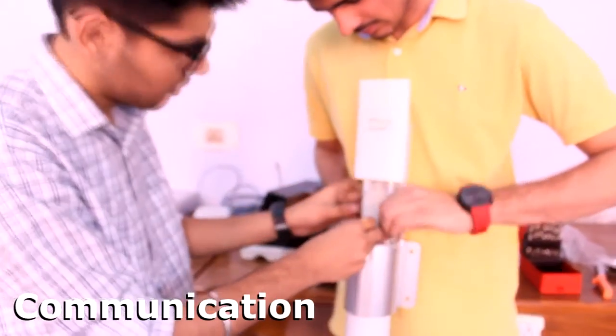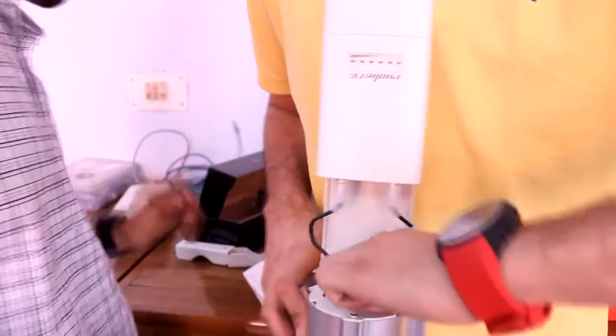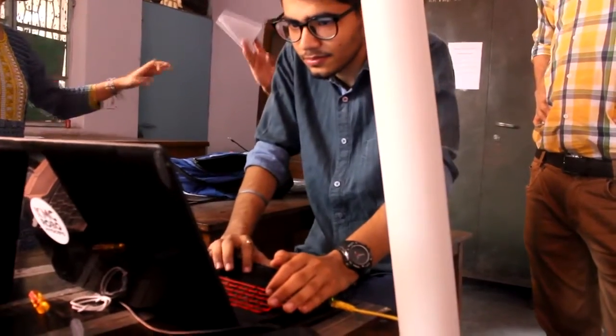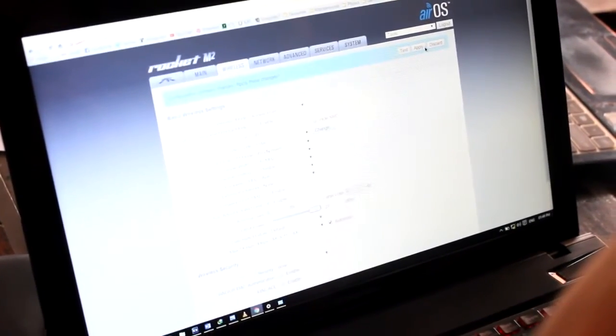The team encountered major problems in communication and electronics during the competition last year. Ergo, the team decided upon Ubiquiti's omnidirectional antenna, Rocket M2 and Nanostation M2 for communication. The omnidirectional antenna and Rocket M2 will be used at the base station for transmission.